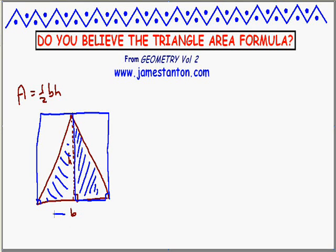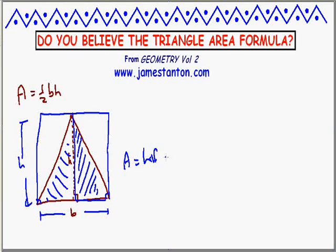The rectangle is b wide and h high. So the area of the triangle must be half the area of the rectangle — half bh — which is this formula.